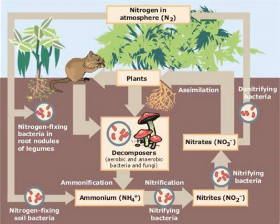Procedure: Observing the nitrogen-fixing bacteria. Number one: obtain a root from a nitrogen-fixing plant. Two: examine the root under the dissection scope. Draw a detailed picture of the root. Label the nodules and the roots. Three: remove a single nodule using tweezers. Four: using a scalpel, carefully slice the nodule in half.